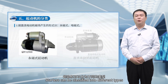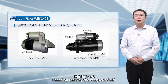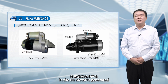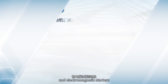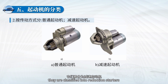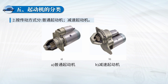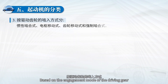Starters can be classified into different types based on various criteria. Based on the way the magnetic field in a DC motor is generated, starters are classified into permanent magnet starters and electromagnetic starters. Based on the presence of a reduction mechanism in the transmission, they are classified into reduction starters and non-reduction starters. Starters with a gear reducer between the electric shaft and the driving gear are called reduction starters.